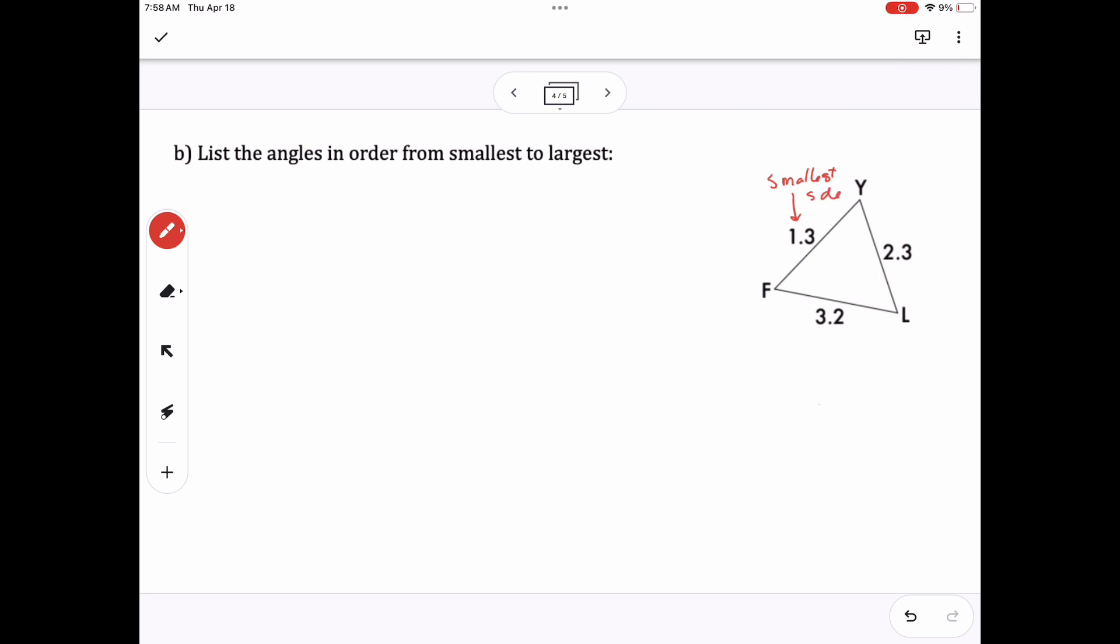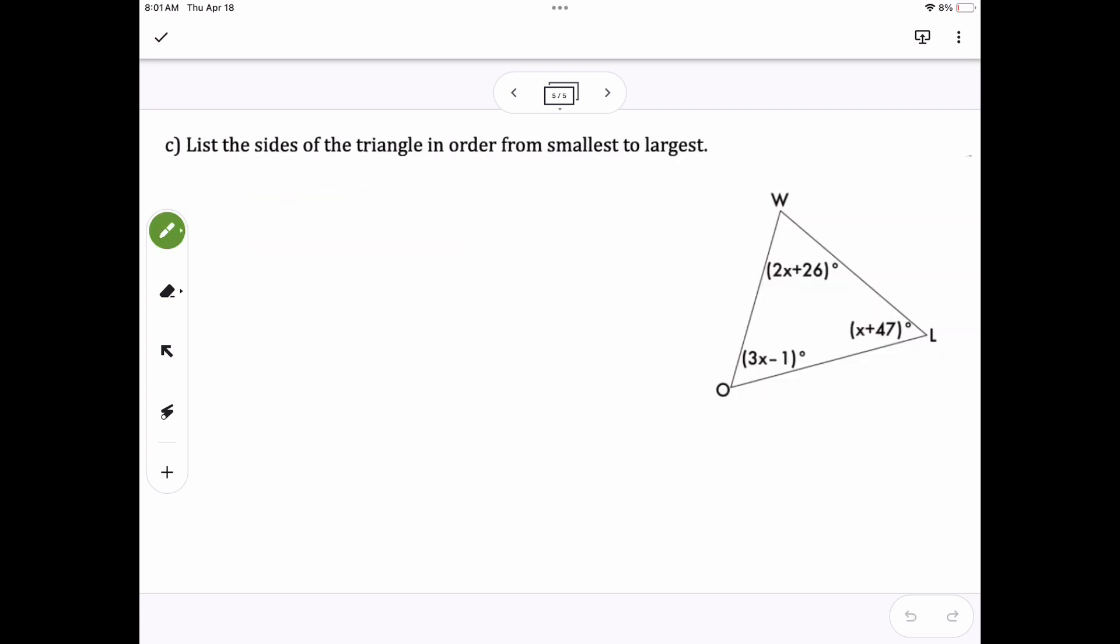Here I have a list of the sides, but I want to figure out what the order of the angles are. So FY is the smallest side, so that means angle L is the smallest angle. FL is the largest side, so that means Y is the largest angle. So my order should be angle L, angle F, and angle Y.